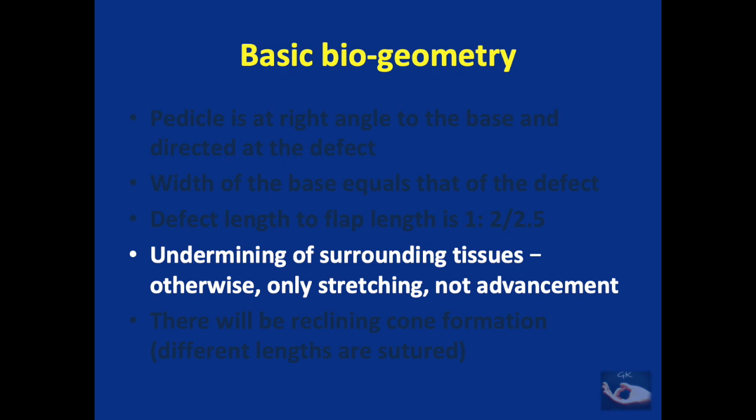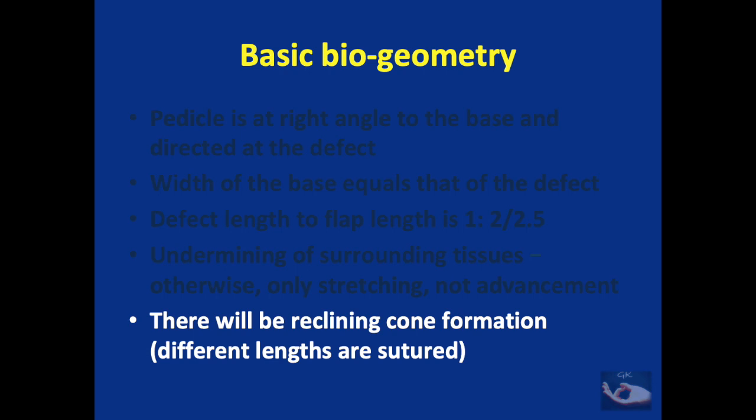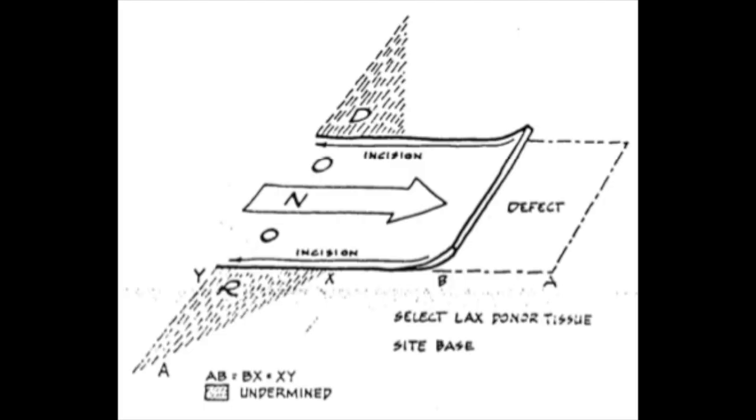Stretching may cause compromise of the vascularity of the flap, and to help in this advancement there are many techniques which we shall soon be seeing. Lastly, there will be a reclining cone formation which usually occurs when two different lengths are sutured.